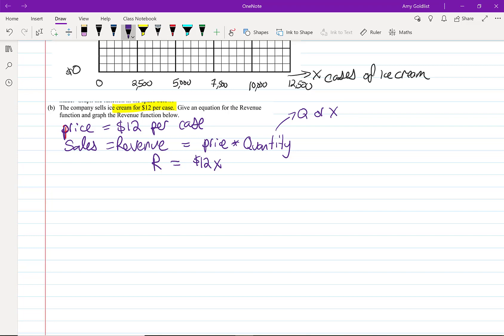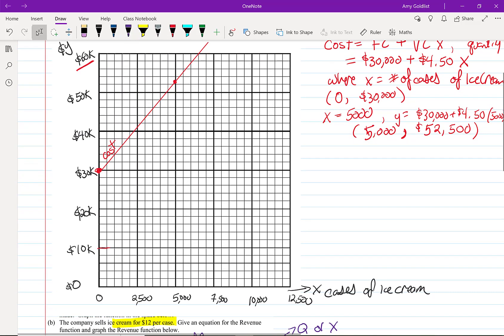When I put in what I have for this, I end up with revenue, I'm calling that R, is 12X. If I sell X cases of ice cream, I make 12 times X in price. Scrolling up, I'm gonna write this again over here.